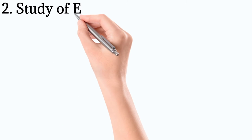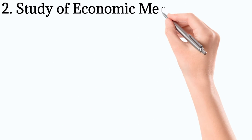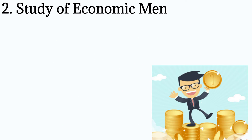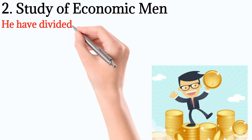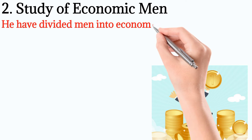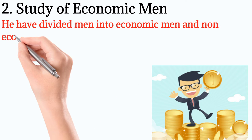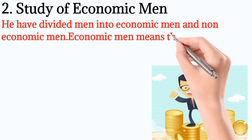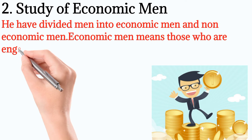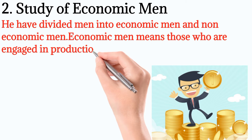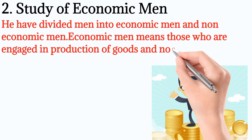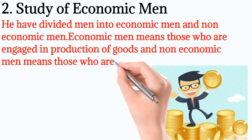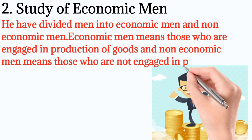Number 2: Study of economic man. He divided men into economic men and non-economic men. Economic men means those who are engaged in the production of goods, and non-economic men means those who are not engaged in the production of goods.